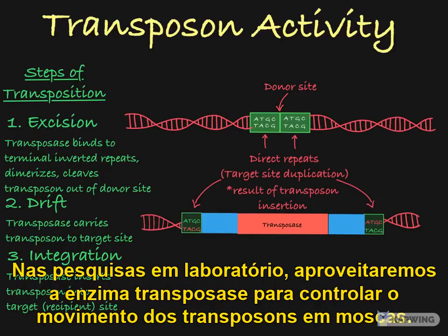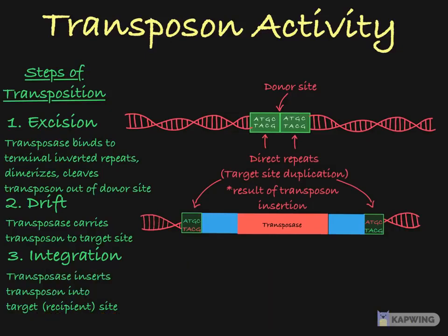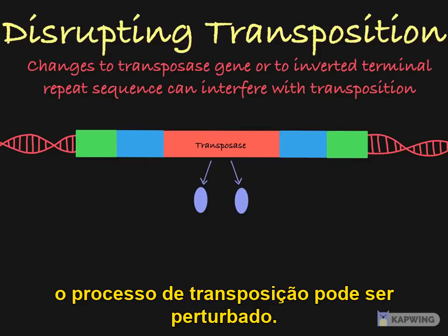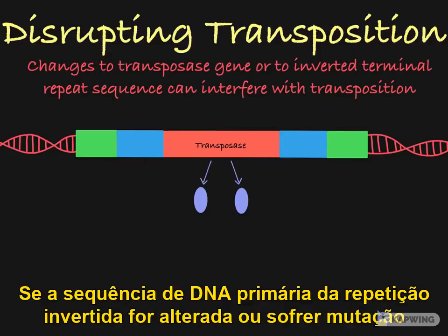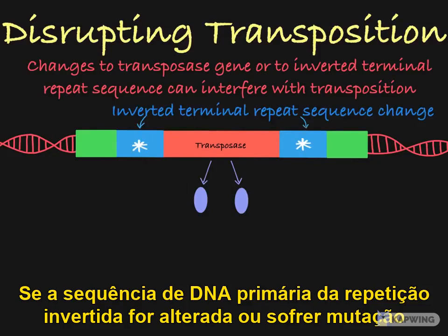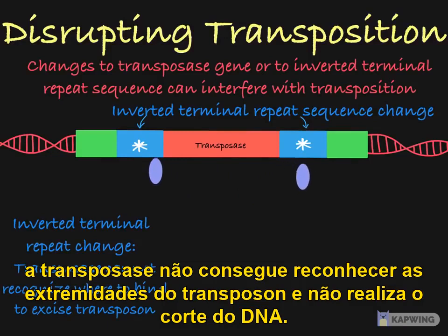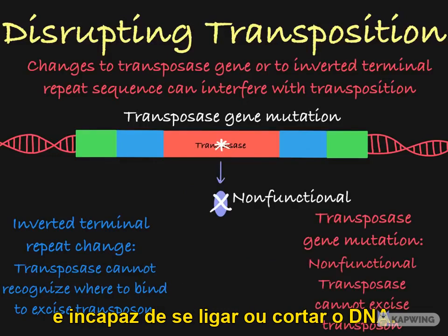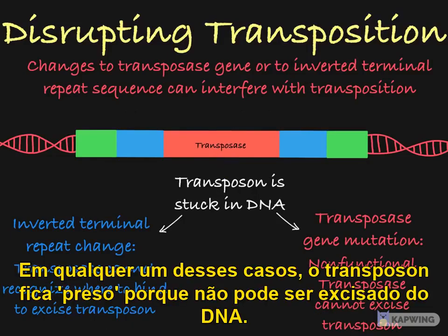In our lab work, we will take advantage of the requirement for the transposase enzyme to control the movement of fly transposons. Now, if the sequence in the transposase gene or in the inverted terminal repeats changes, the process of transposition may be disrupted. If the primary DNA sequence of the inverted repeat has been changed or mutated, transposase cannot recognize the ends of the transposon and does not perform the required double-stranded DNA cut. If the gene encoding the transposase is mutated, the encoded transposase protein might be non-functional and unable to either bind to or cut DNA. In either of these cases, the transposon is stuck because it cannot be excised from the DNA.